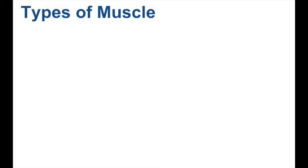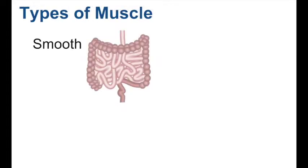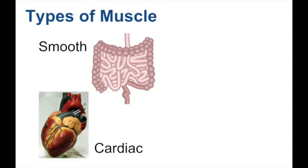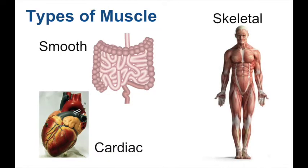There are three types of muscles in the body: smooth, cardiac, and skeletal. Smooth muscle is responsible for involuntary contractions and is found in walls of the intestine, blood vessels, and internal organs. Cardiac muscle is heart muscle, responsible for involuntary contractions or pumping of the heart 24-7. Skeletal muscle attaches to bones and pulls on the bones causing movement. It is responsible for voluntary contractions — in other words, it's under our conscious control.